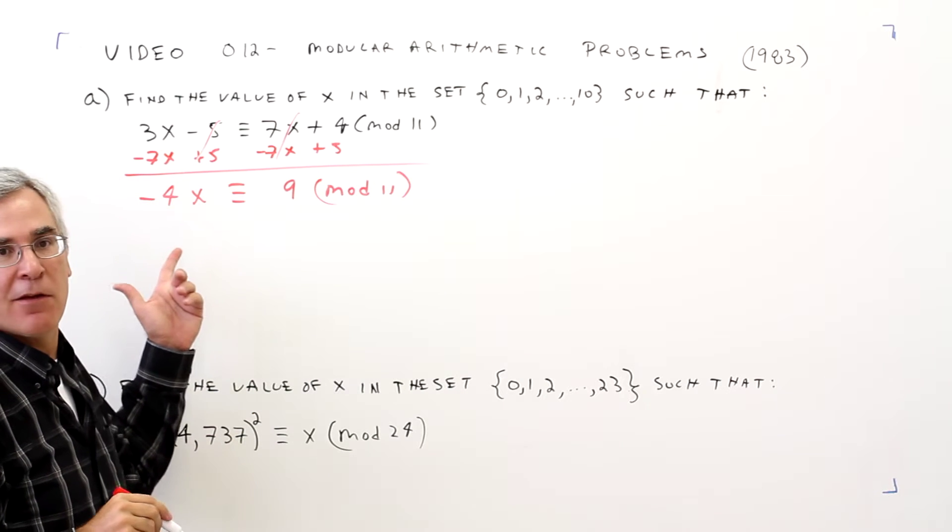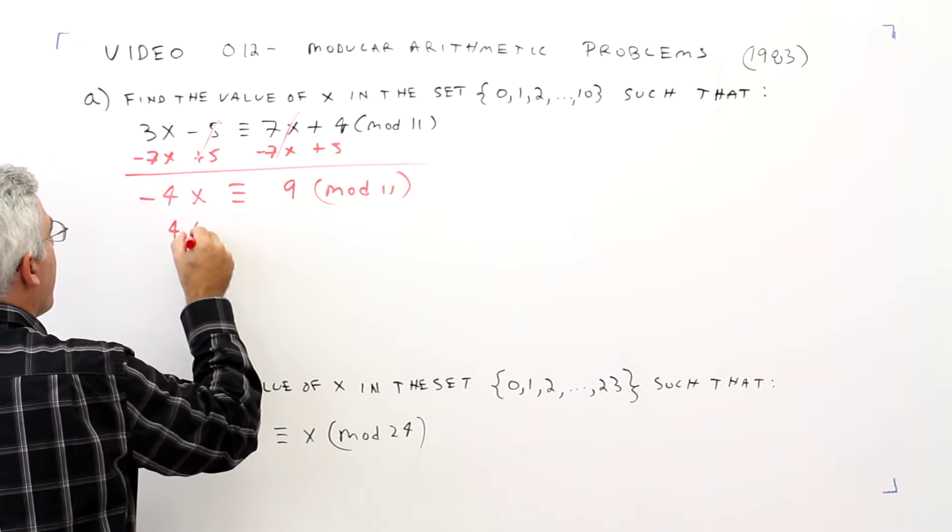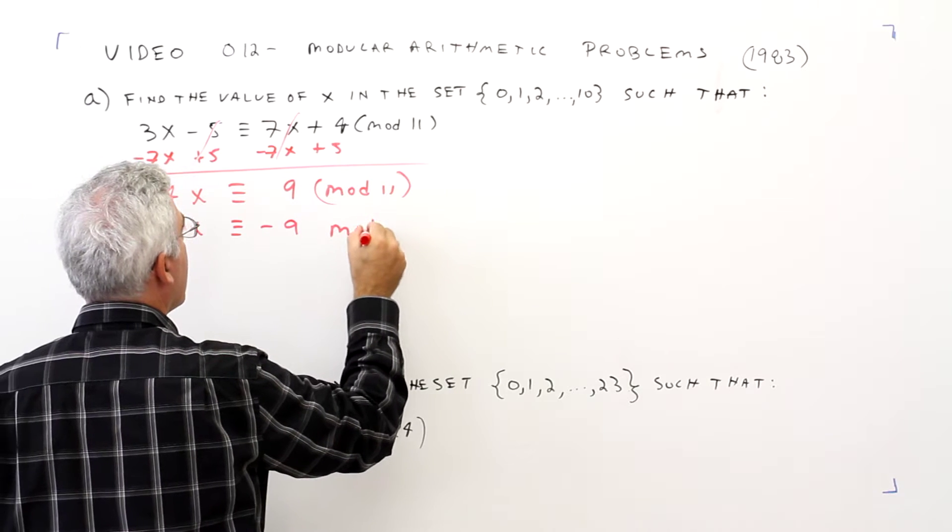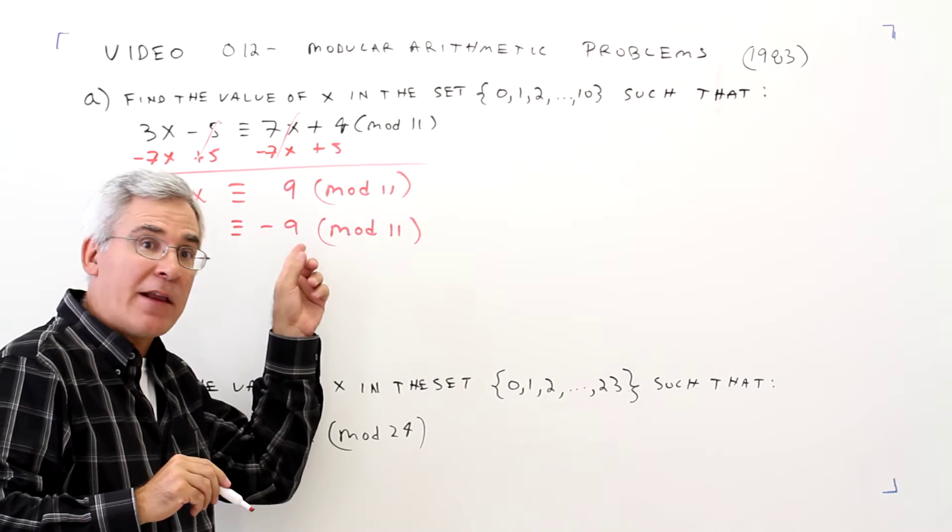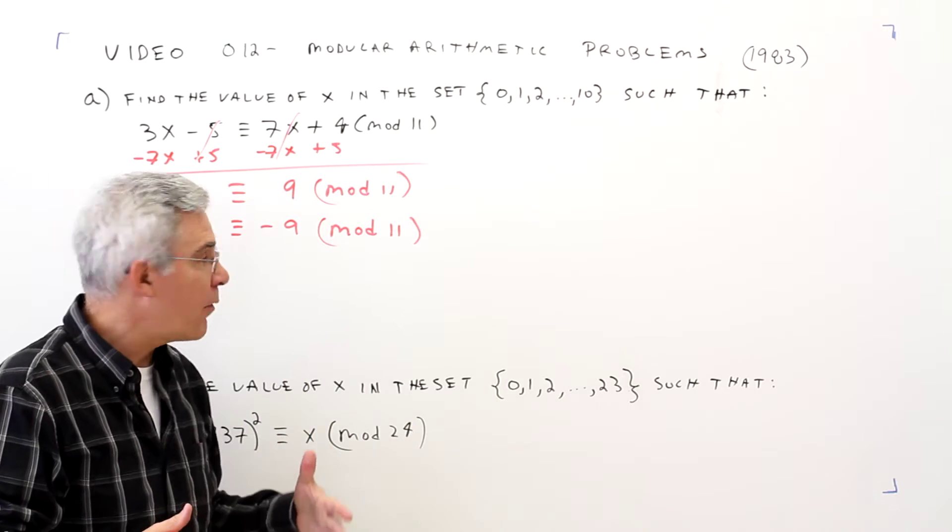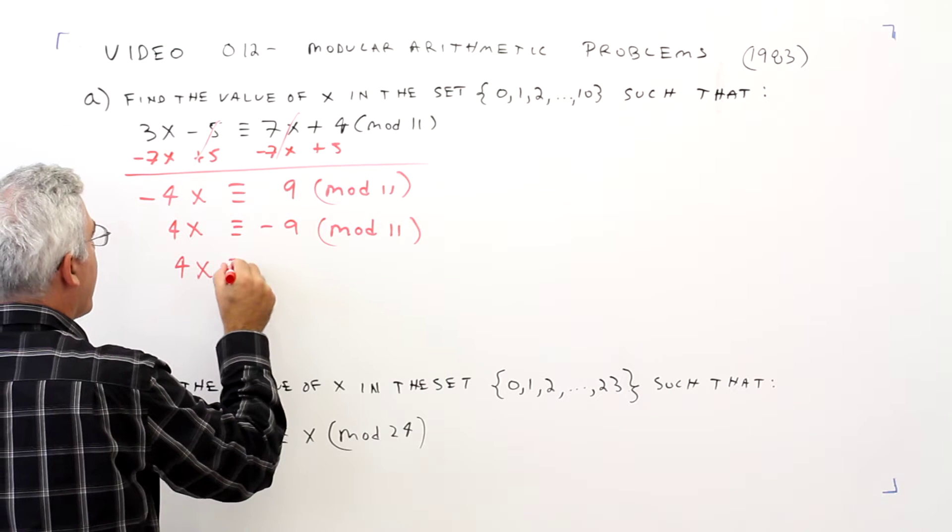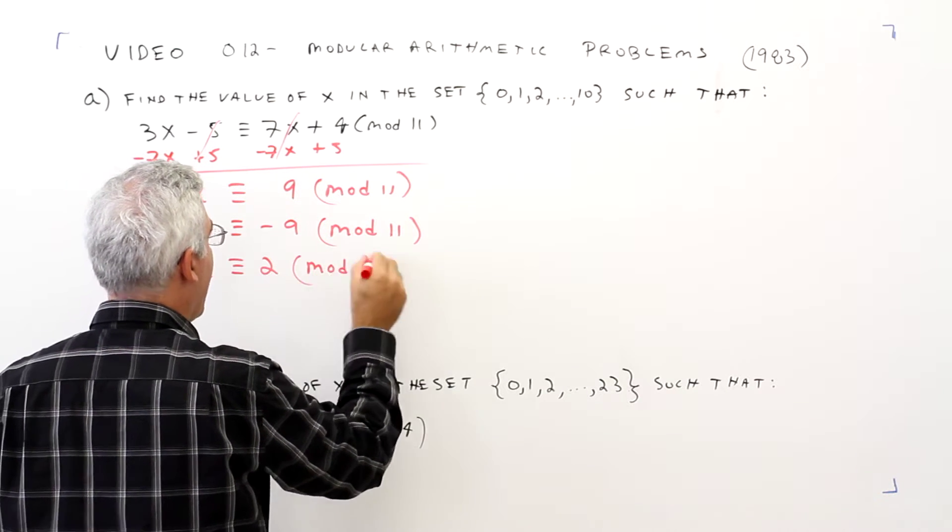I don't like negatives, so let's multiply each side by negative 1. 4x is congruent to negative 9 mod 11. I don't like negatives here either, so let's add a cycle of 11. 4x is congruent to 2 mod 11.